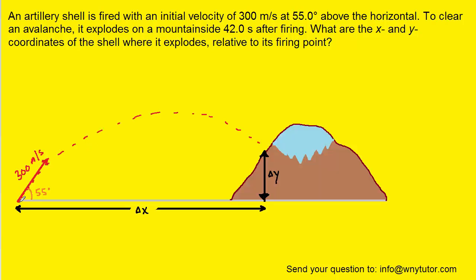So here we have the artillery shell being fired at a 55 degree angle at 300 meters per second. It's going to sail through the air and collide with the mountainside here. The question is asking us to find the horizontal displacement, as well as the vertical displacement, of the shell during the 42 seconds of its flight.